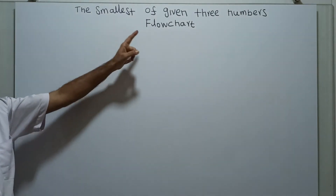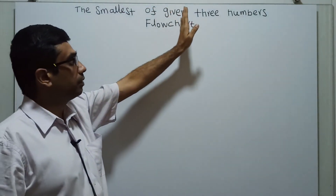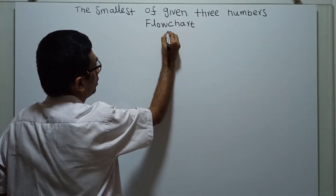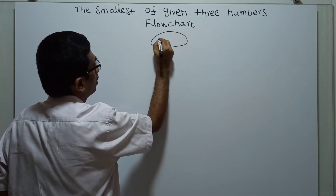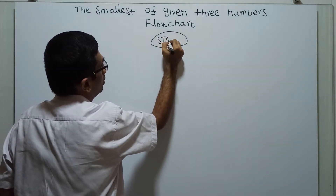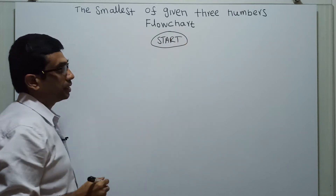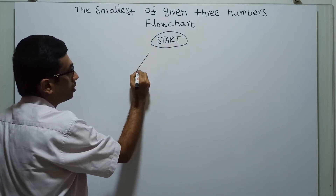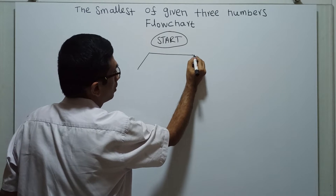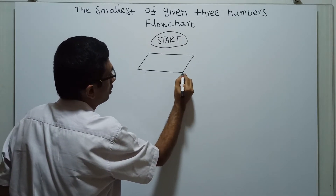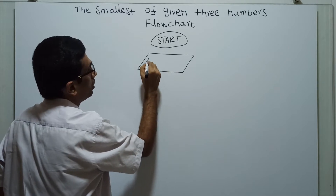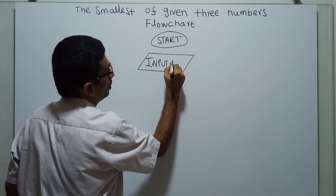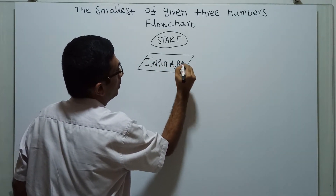Hello friends, we are going to draw a flowchart to calculate the smallest of given three numbers. Logical start of the flowchart. I am obtaining three numbers as an input: A, B and C.